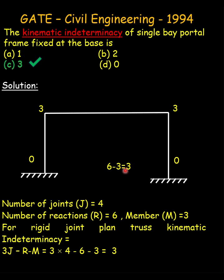The correct option is C, and the same result can be obtained using the formula 3J minus R minus M, which in this case equals 3.